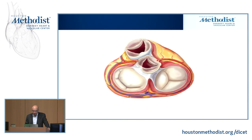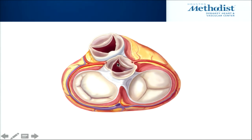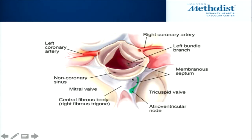This is a view from above, looking down at the four valves in the heart. This is the aortic valve, that's the mitral valve, and this is the tricuspid valve with the pulmonic valve located over here. This is the central fibrous body of the heart — the right fibrous trigone — which links the aortic valve, the mitral valve, and the tricuspid valve. The left fibrous trigone is seen here, and the septal leaflet of the tricuspid valve is attached to the central fibrous body.